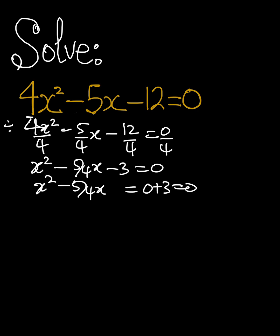So what I'm going to do is I'm going to take half of negative 5 over 4. Don't forget that. And when we do that, we're going to have negative 5 over 8.